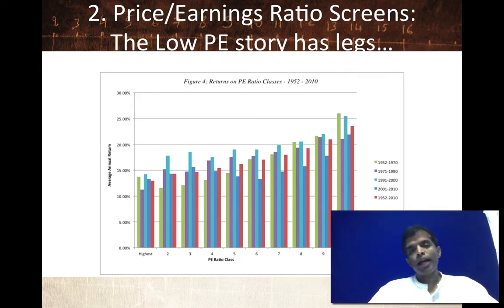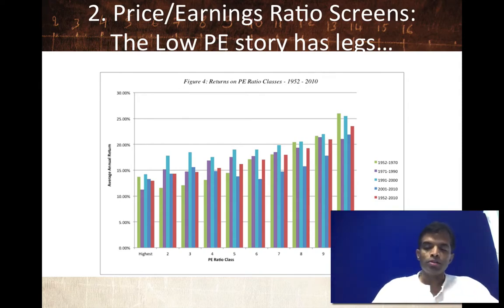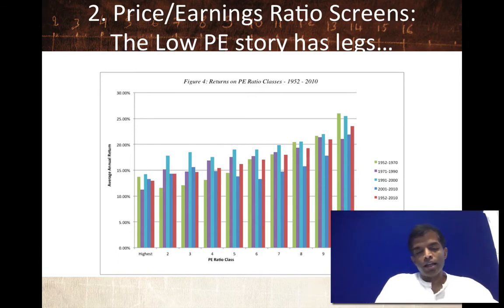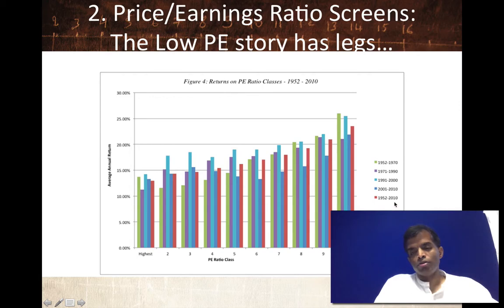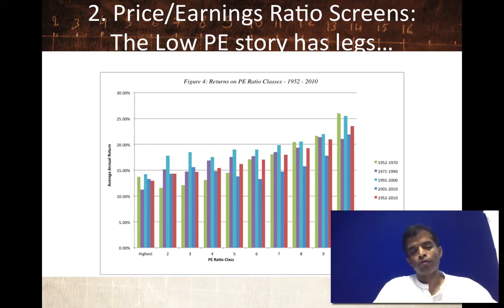Now let's look at PE ratios. The intuition is simple: when you buy a stock with a low PE, the argument is you're getting a lot for your money — a much better bargain because you get a lot of earnings for a relatively low price. Looking at the evidence from 1952 through 2010, with PE ratios classified from highest to lowest, you can see that over those time periods, low PE stocks have historically delivered about 3%, 4%, or 5% more than the rest of the market.